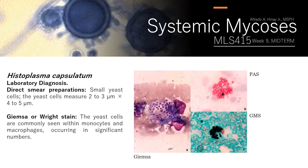For Gomori methenamine silver nitrate stain (GMS), the background is green and the color of your fungal elements is black. With Periodic Acid-Schiff (PAS) stain, since the mode of action attaches to polysaccharides in the fungal wall, the fungal elements stain pink or magenta — with magenta being stronger than pink. The background for PAS is usually pink.